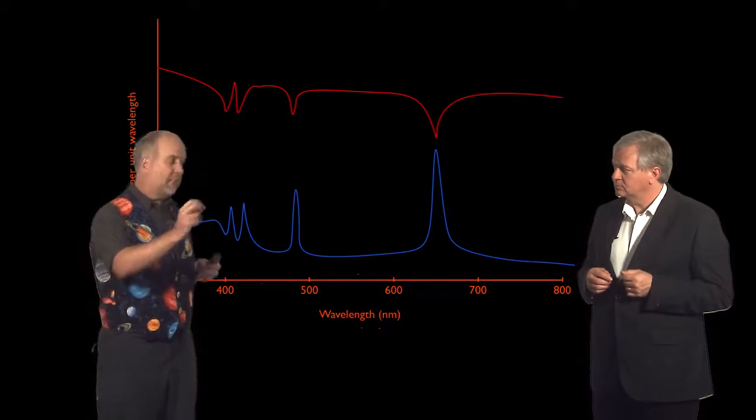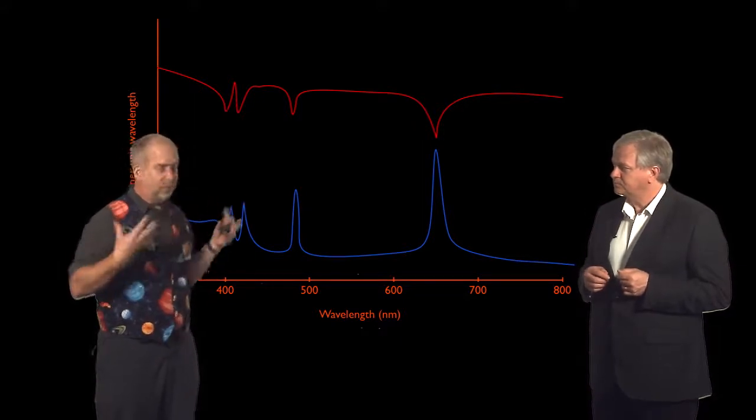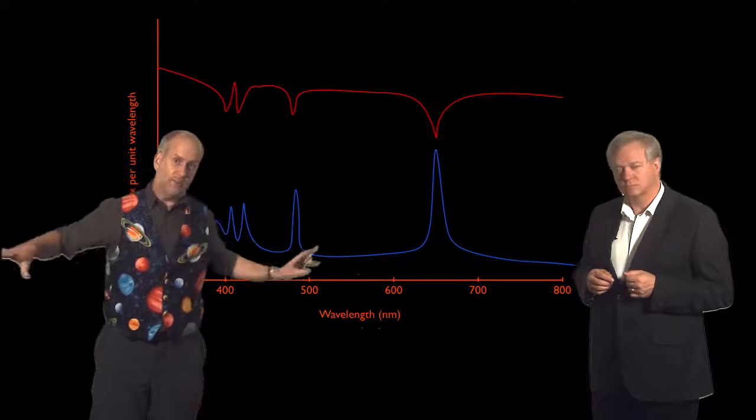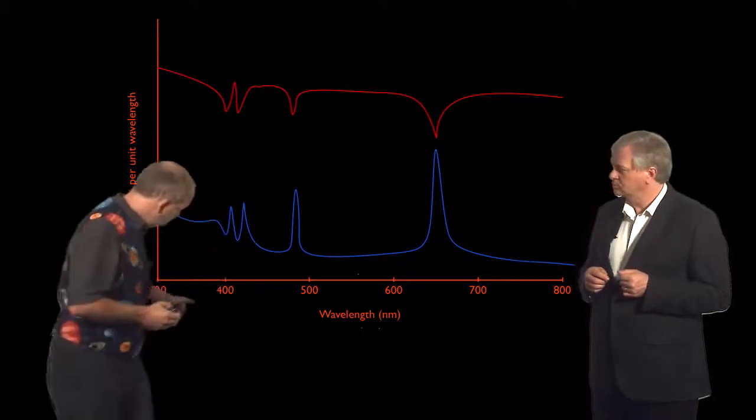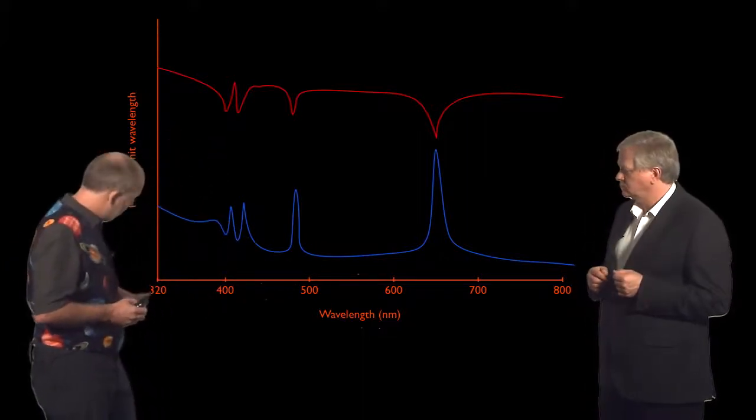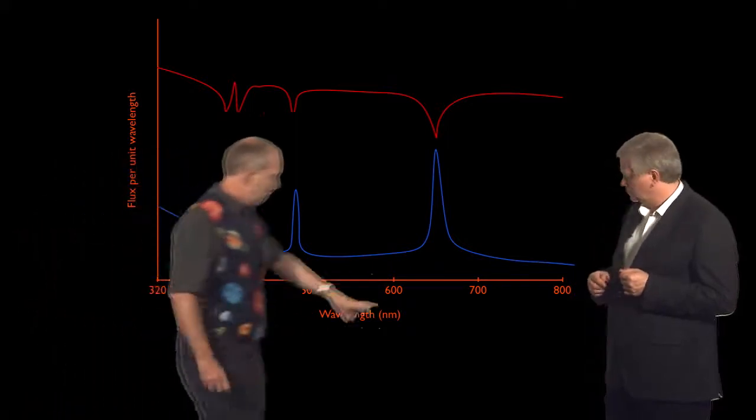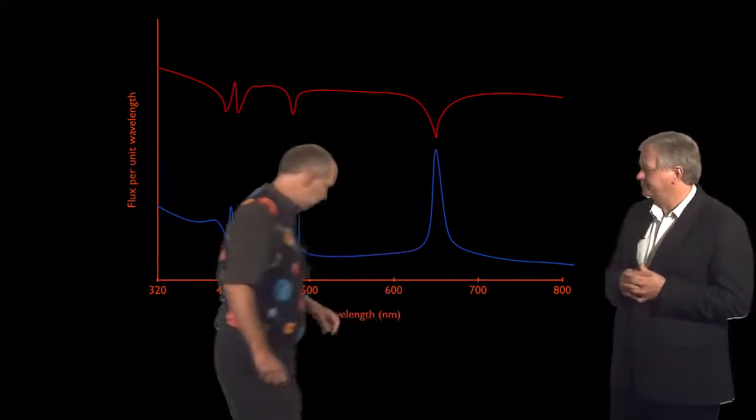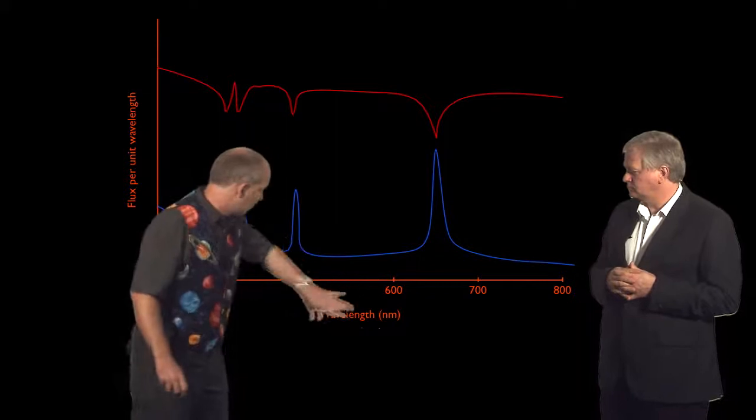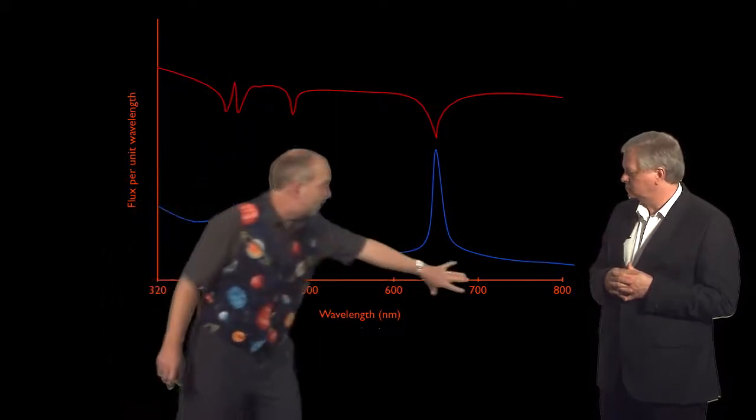But we can take the light from that pixel and put it through a prism or a diffraction grating and break it out into its component wavelengths. Down here we're plotting the wavelength in nanometers, from the ultraviolet out to the near infrared. This is visible light. This is what the eye perceives as green, this is blue, this is red.